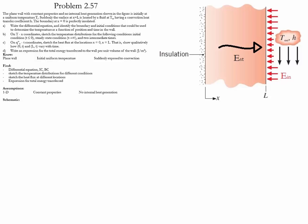Problem 2.57 is a one-dimensional conduction case in which a wall is initially at a given temperature and then starts being heated up by a fluid, so convection takes place. The properties are constant and there is no internal heat generation. We need to determine the differential equation, the boundary conditions, the initial conditions, plot the temperature distribution at different conditions, plot the heat flux at different locations, and write an expression for the total heat transfer into the wall per unit volume.